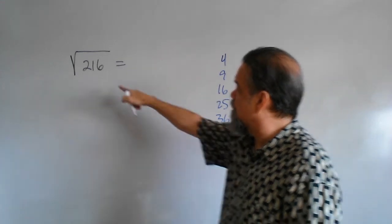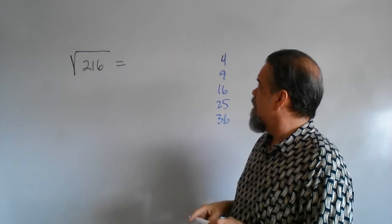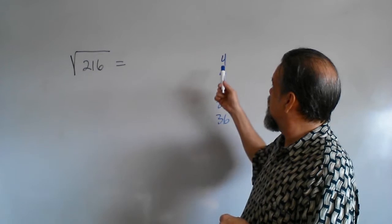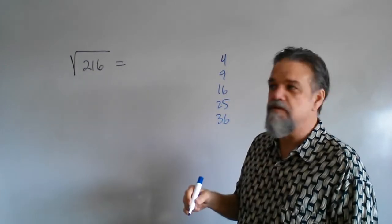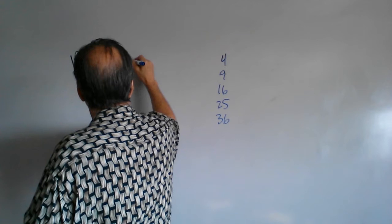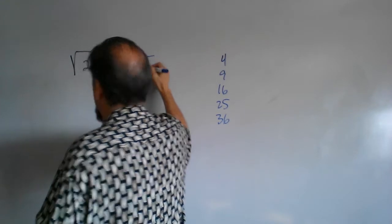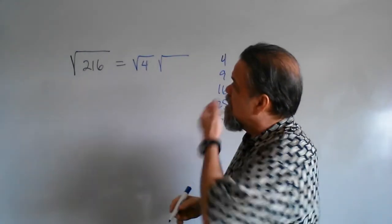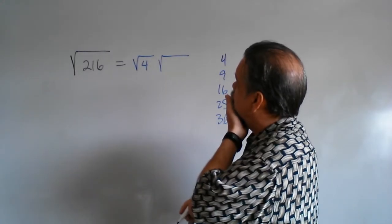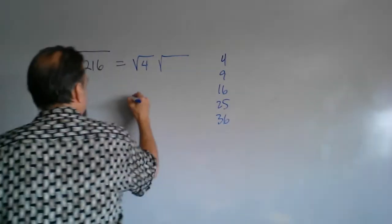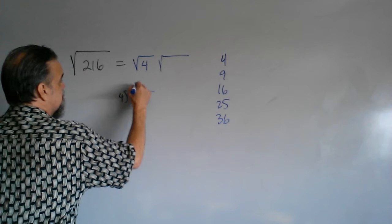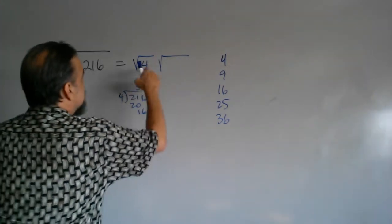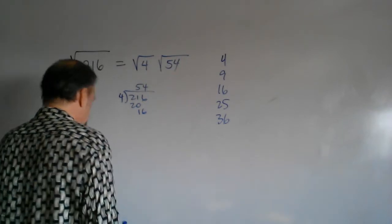So is there a perfect square that will go into 216? I'm going to say yes — 4 goes into 216. So that means this would be the square root of 4 times the square root of 216 divided by 4. And 216 divided by 4 is 54. So this will be the square root of 4 times the square root of 54.